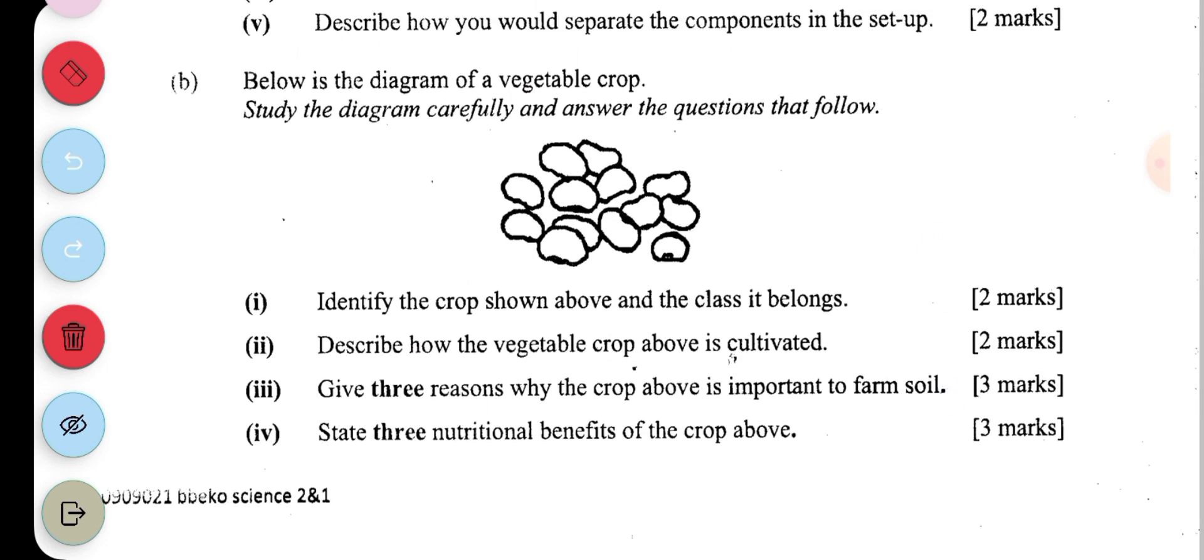It says below is the diagram of a vegetable crop. Study the diagram carefully and answer the questions that follow. Identify the crop shown above and the class it belongs to. So the name of the crop is beans or cow pea. Then the next one is the class. The class is legumes or is a leguminous crop.